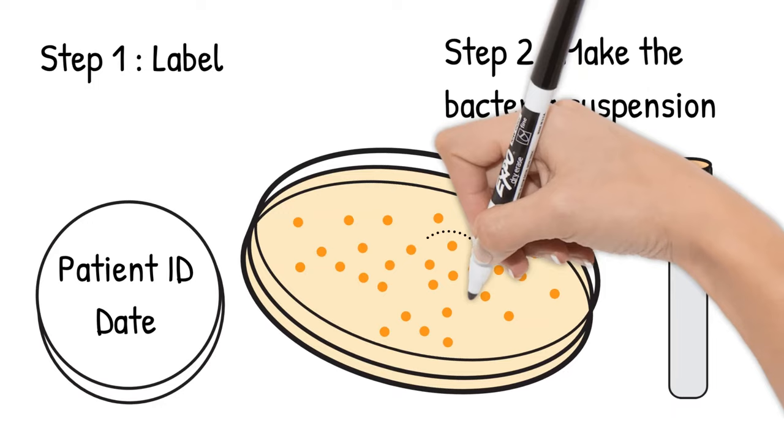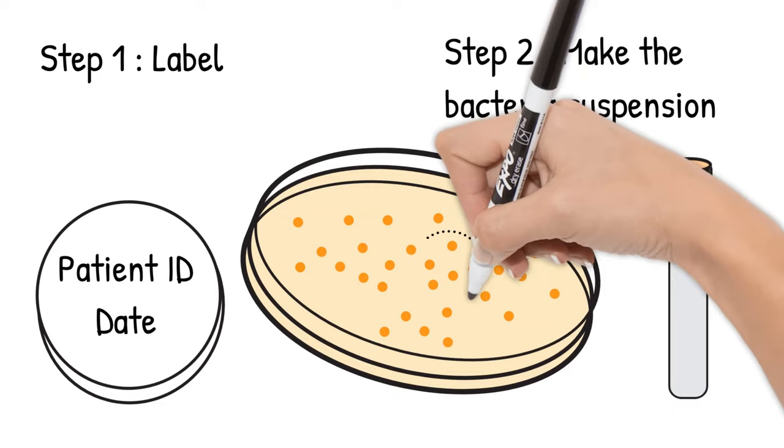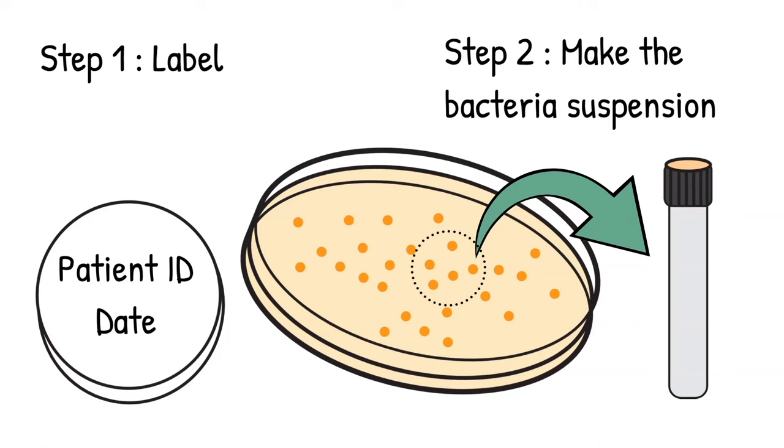We select a few colonies, not just one big colony, because we want to make sure that we get well representations of the culture. If some of the bacteria develop resistance, then we will have a better chance of catching it, or if the patient is infected with more than one type of bacteria, we will have a higher chance of catching it if we get a few colonies instead of just one big colony.